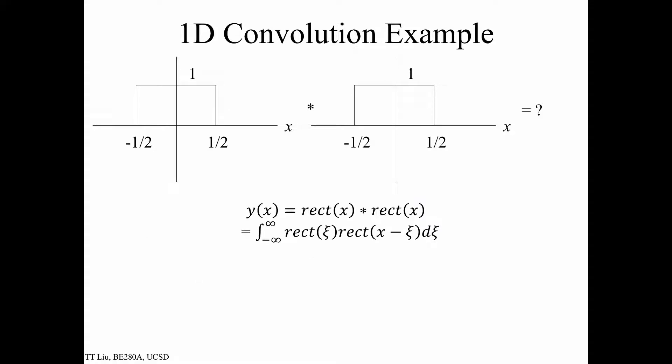Here's the specific example we're going to look at. The problem is: what happens when we take a rect function and convolve it with another rect function? So we have rect convolved with rect, and mathematically that means we want to evaluate the integral of rect of xi multiplied by rect of x minus xi, d xi.